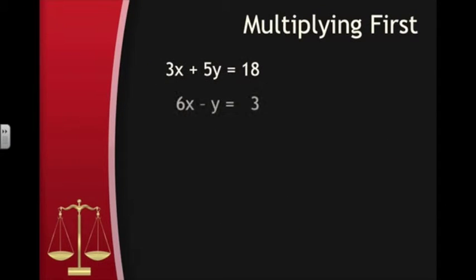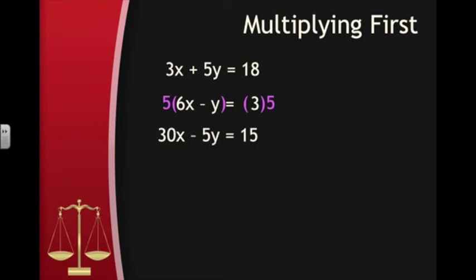So what do we do if the equations don't have opposite coefficients to begin with? We use algebra to make them opposites. This is the first system we looked at: 3x plus 5y equals 18 and 6x minus y equals 3. When we added the equations together, neither variable was eliminated. However, since the first equation has a plus 5y and the second has a minus 1y, we just need to multiply the second equation by 5 to get the minus 5y we need. When we multiply the second equation by 5, making sure we are fair to every part, we get the equation 30x minus 5y equals 15.